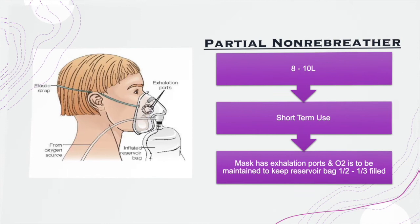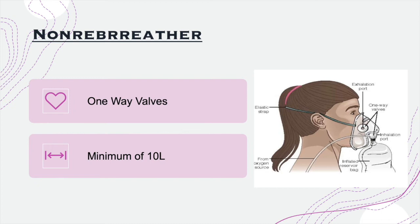The non-rebreather face mask is the last resort among face masks. It features one-way valves that prevent any exhaled air from re-entering the bag, providing a constant oxygen supply to the patient. A non-rebreather mask delivers a minimum of ten liters of oxygen, which also helps maintain the inflation of the attached bag.